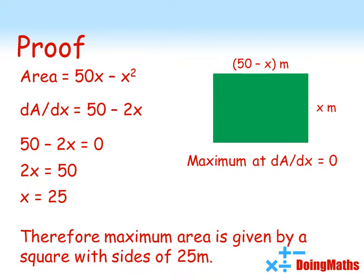Now, if you remember, 25 metres is what gives us a square. So, the maximum area is given by a square with sides of 25 metres, giving an area of 625 square metres.